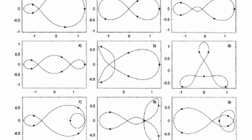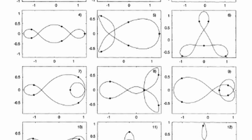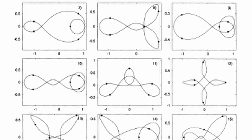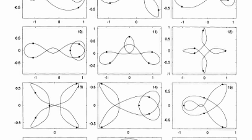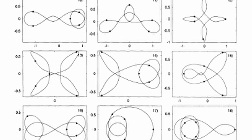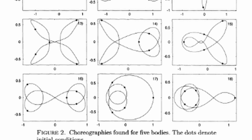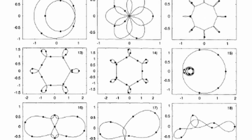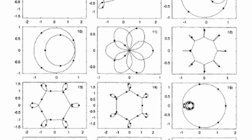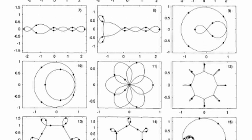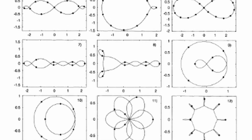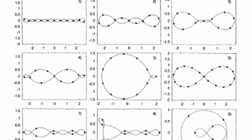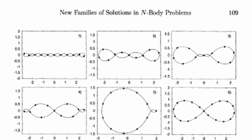Carls Simo also discovered many other choreographies in which several bodies with the same mass pursue each other along complicated, twisting paths. While physically possible, each of these orbits is more unlikely to exist than the last.